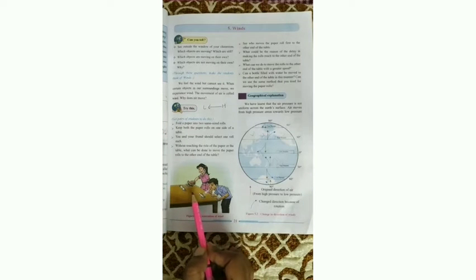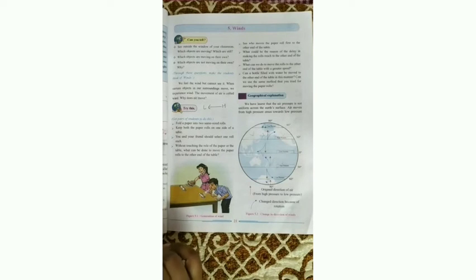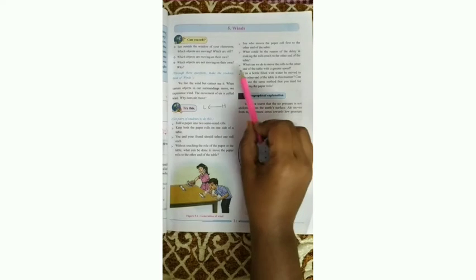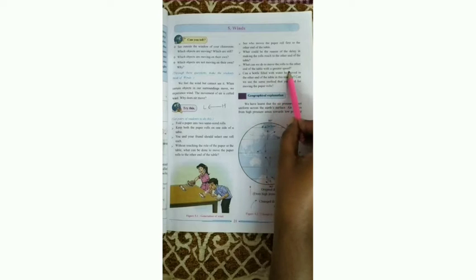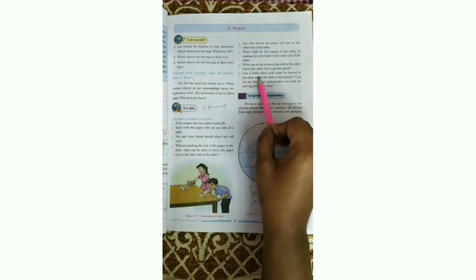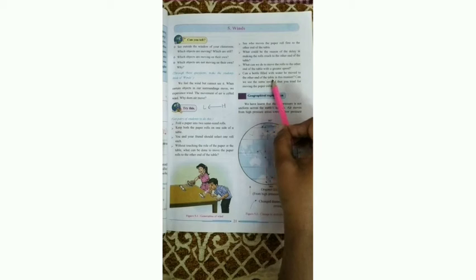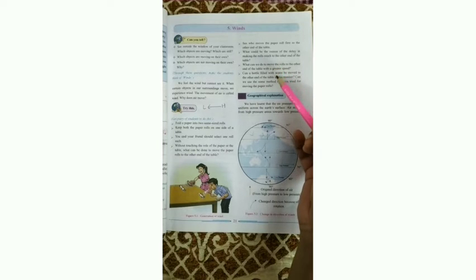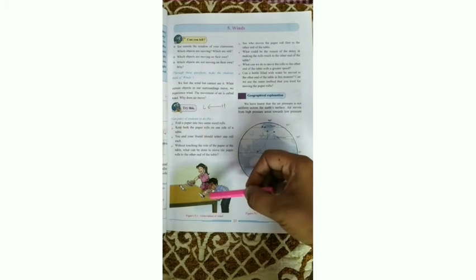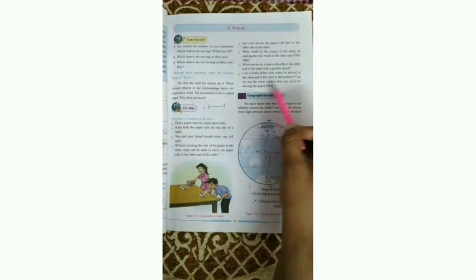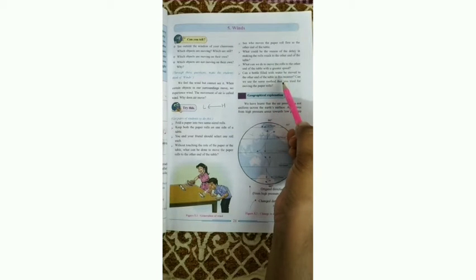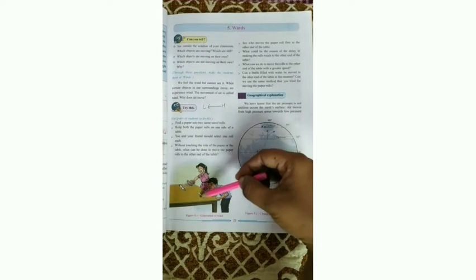Whoever blows more air will move their roll faster, and the other will be delayed. To move the roll to the other end of the table with greater speed, you have to blow air more forcefully. Can a bottle filled with water be moved to the other end of the table in this manner? No, because a bottle has much more weight compared to a paper roll. We cannot use the same blowing method to move a water-filled bottle across the table.